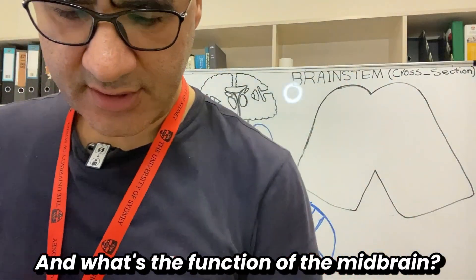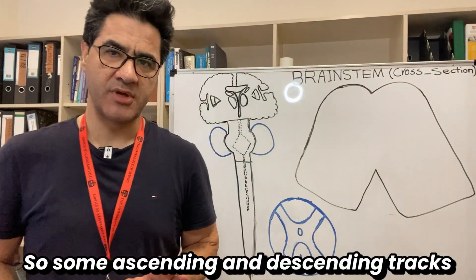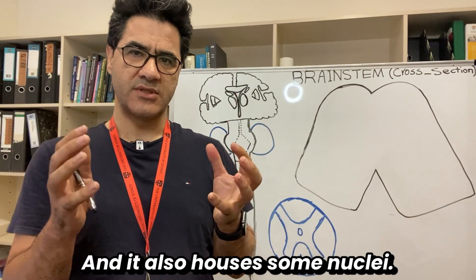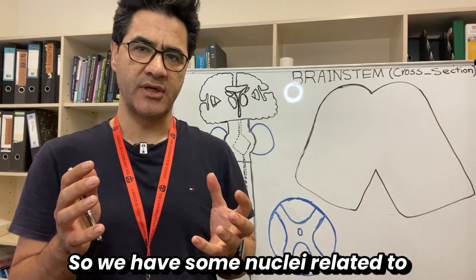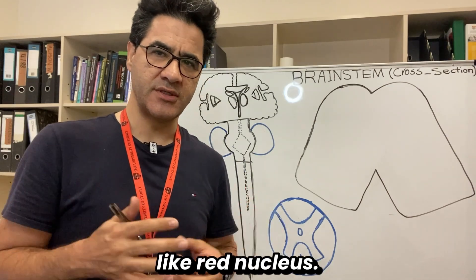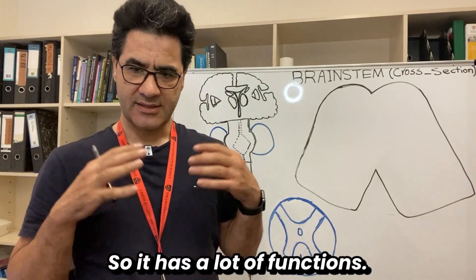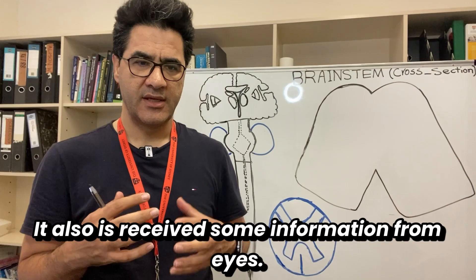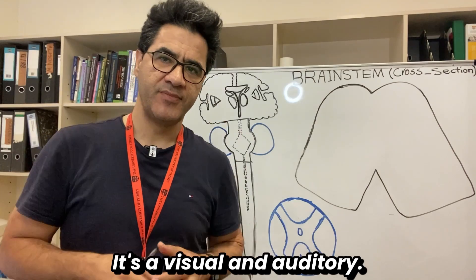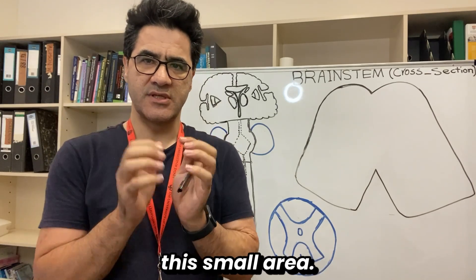What is the function of the midbrain? The midbrain is really crucial because it acts like a highway — ascending and descending tracts go up and come down through it. It also houses some nuclei, including those related to cranial nerves 3 and 4, the red nucleus, and the substantia nigra. It also receives information from the eyes and ears — visual and auditory. So it's a small area, but lots of structures are packed into it.